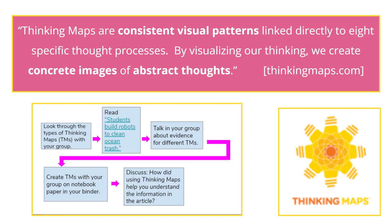We're going to use thinking maps. Thinking maps are consistent visual patterns that are connected to specific thought processes. By using thinking maps, the kids are able to take their abstract thoughts and make concrete images. The more fluent the kids are with the maps, the better they'll understand text structure, the better they'll understand the way questions are asked, and they'll be able to apply it to their writing as well. If I had your child last year in third grade, we worked with thinking maps and we're going to continue to build on that foundation this year.